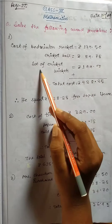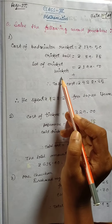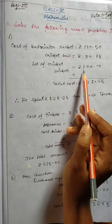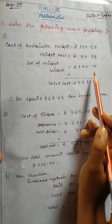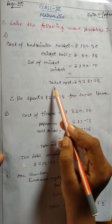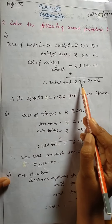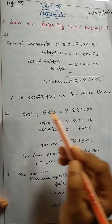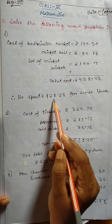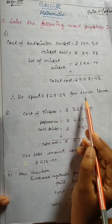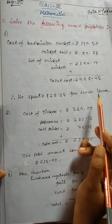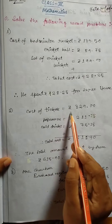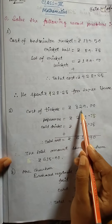Okay, so let's start. Cost of badminton racket: rupee 139.50. Cricket ball: rupee 89.75. Set of cricket wickets: rupee 199. Adding these, total cost equals rupee 428.25. So he spent rupee 428.25 for three items.